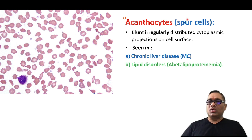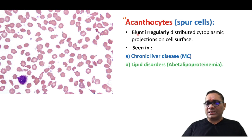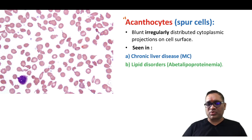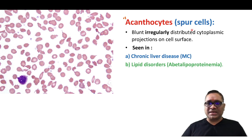Acanthocytes are also known as spur cells. They have blunt, irregularly distributed cytoplasmic projections on the cell surface, as you can see.